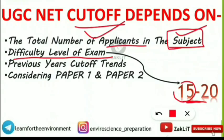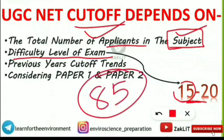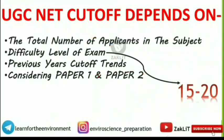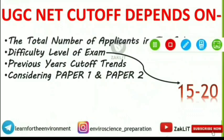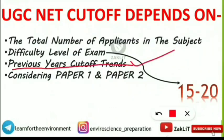That means they were very difficult, but the paper was not completely out of level. Around 85 questions were from topics discussed in our revision videos and quizzes. Only 15 to 20 questions came out of the box, but no need to worry. Next important factor is previous year cut-off trends, which are very important in telling us what the expected cut-off can be for this year for Environmental Science.